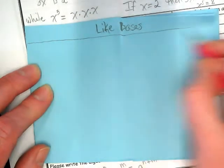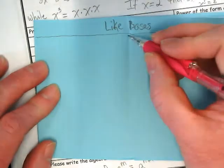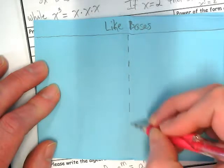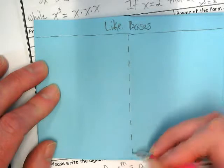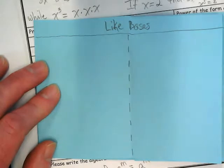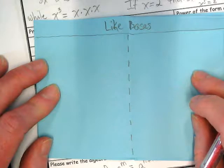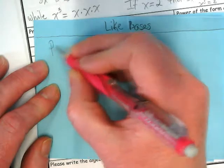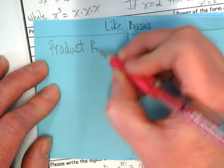Draw a line. Then down the center of your mini book, draw a dashed line. On the left side, we're going to do the product rule.